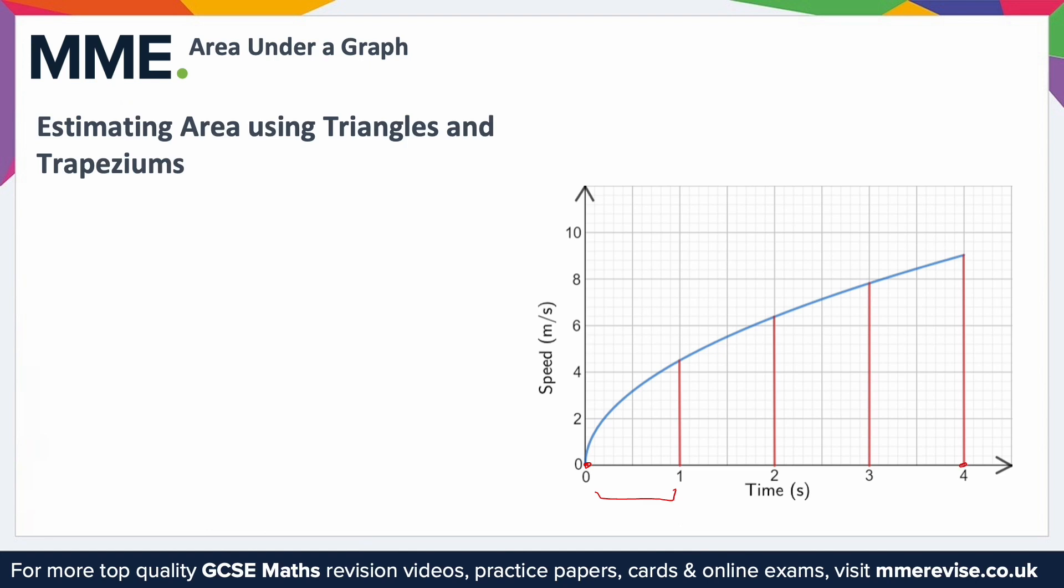Then what we need to do is form some shapes that we know how to work out the area of. At the moment we've got a sort of rectangle with a weird curved bit on the end for this section, which we don't really know how to work out the area for. So what we can do is turn them into common shapes—normally rectangles, trapeziums, and triangles. Doing that for this case, all I'm doing is connecting the start of the interval to the end of the interval. You can see for this first section we've just got a triangle, and then for every other section we have a trapezium.